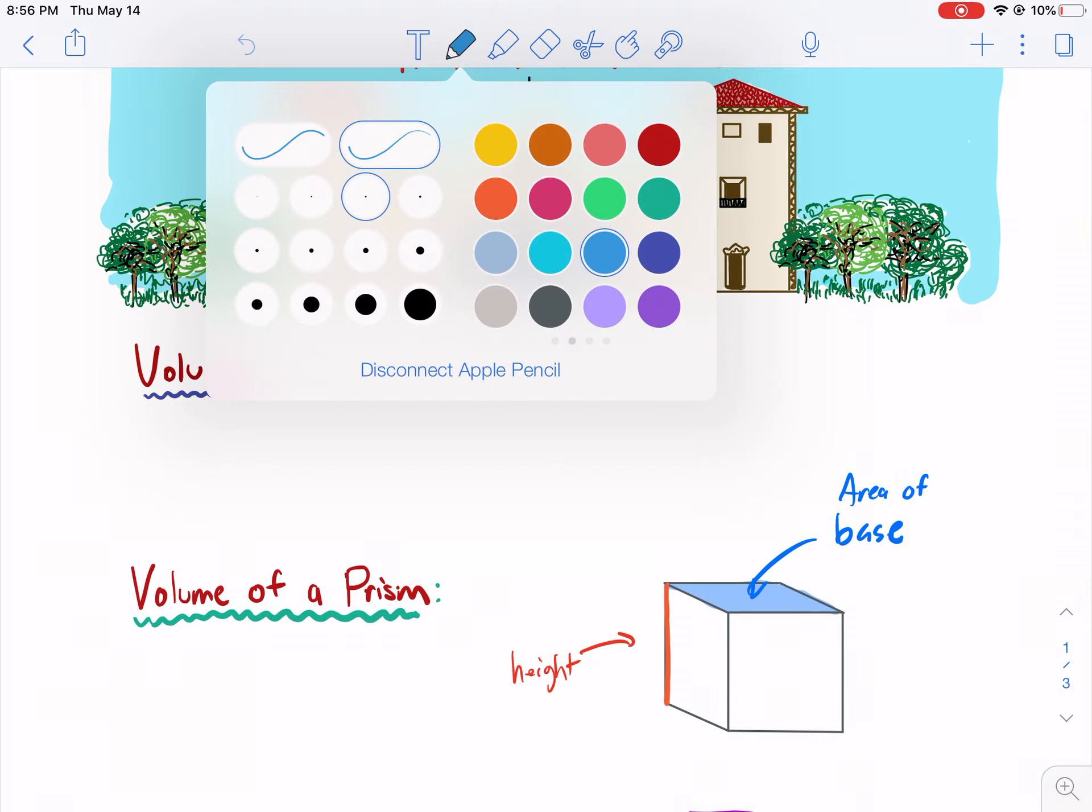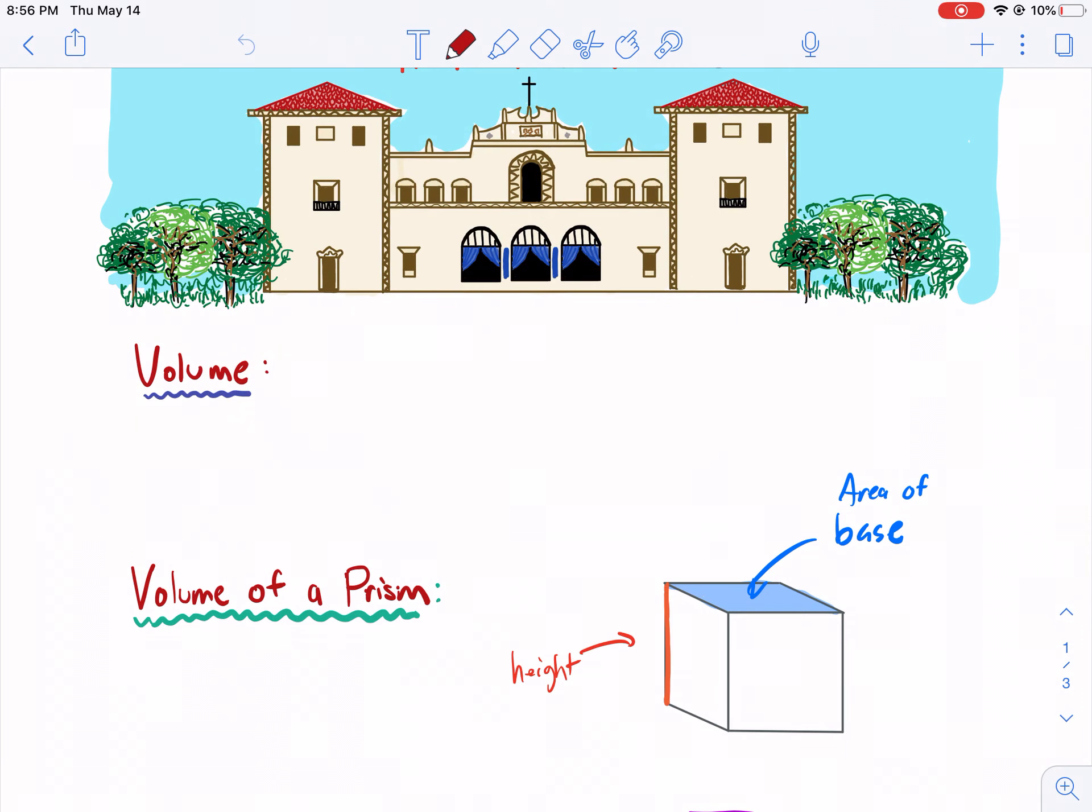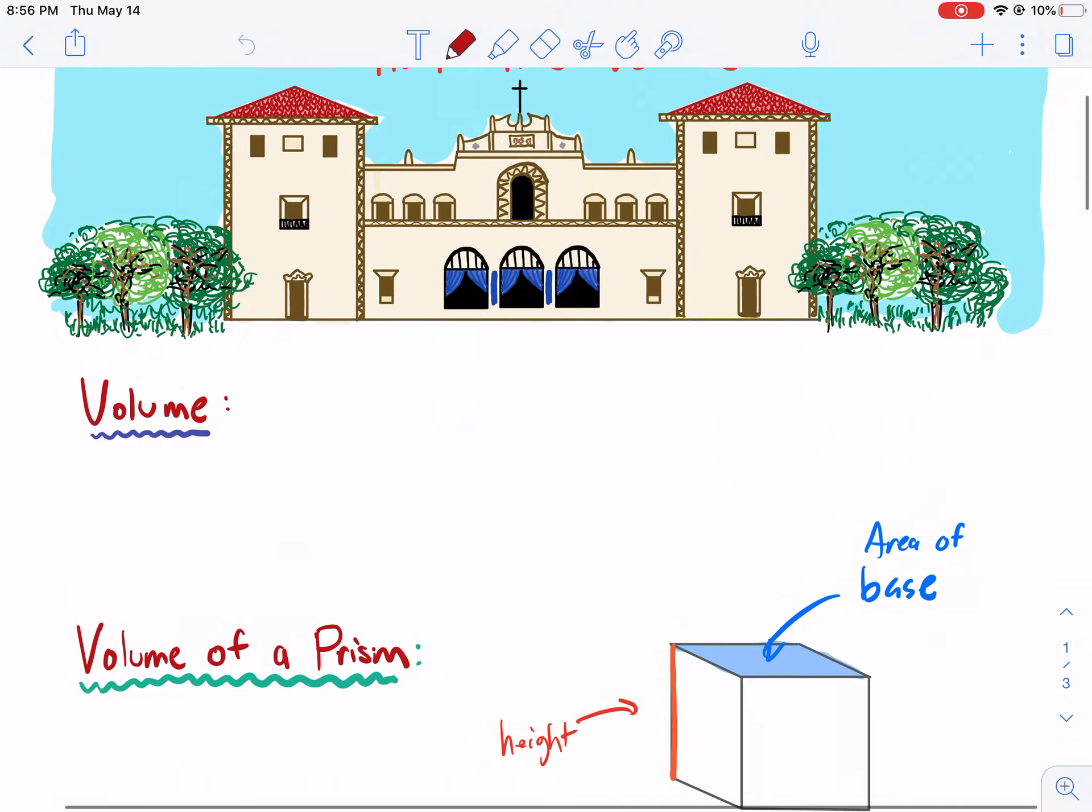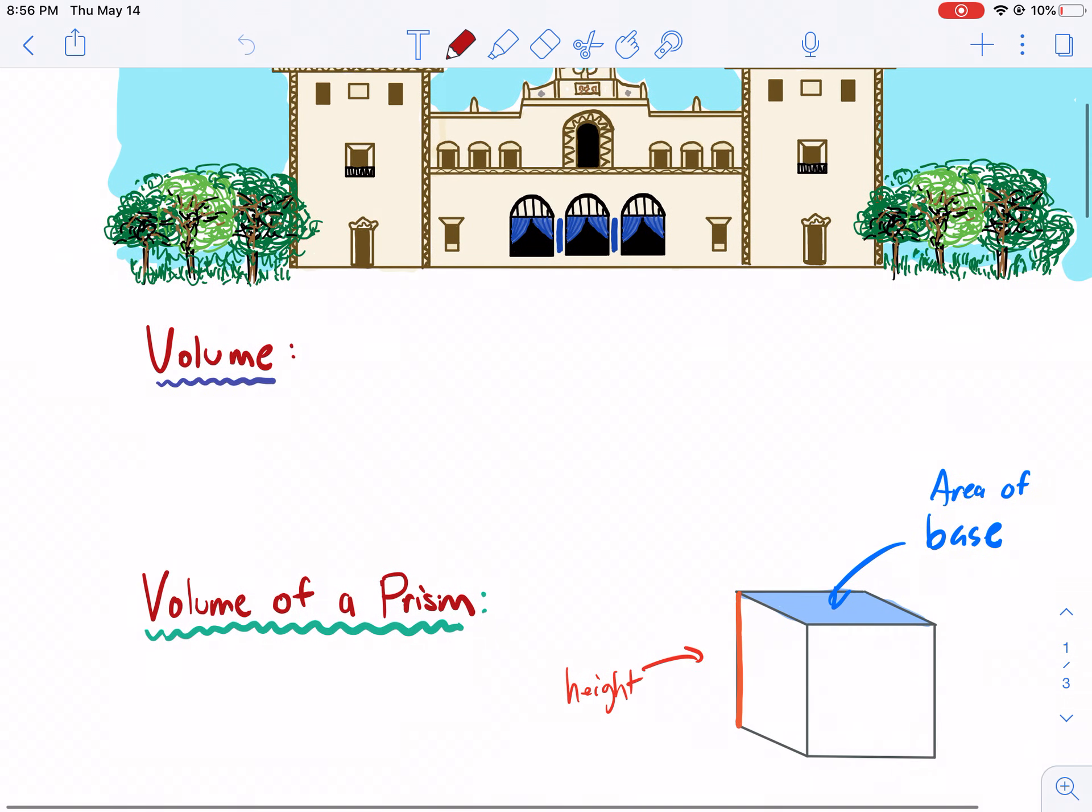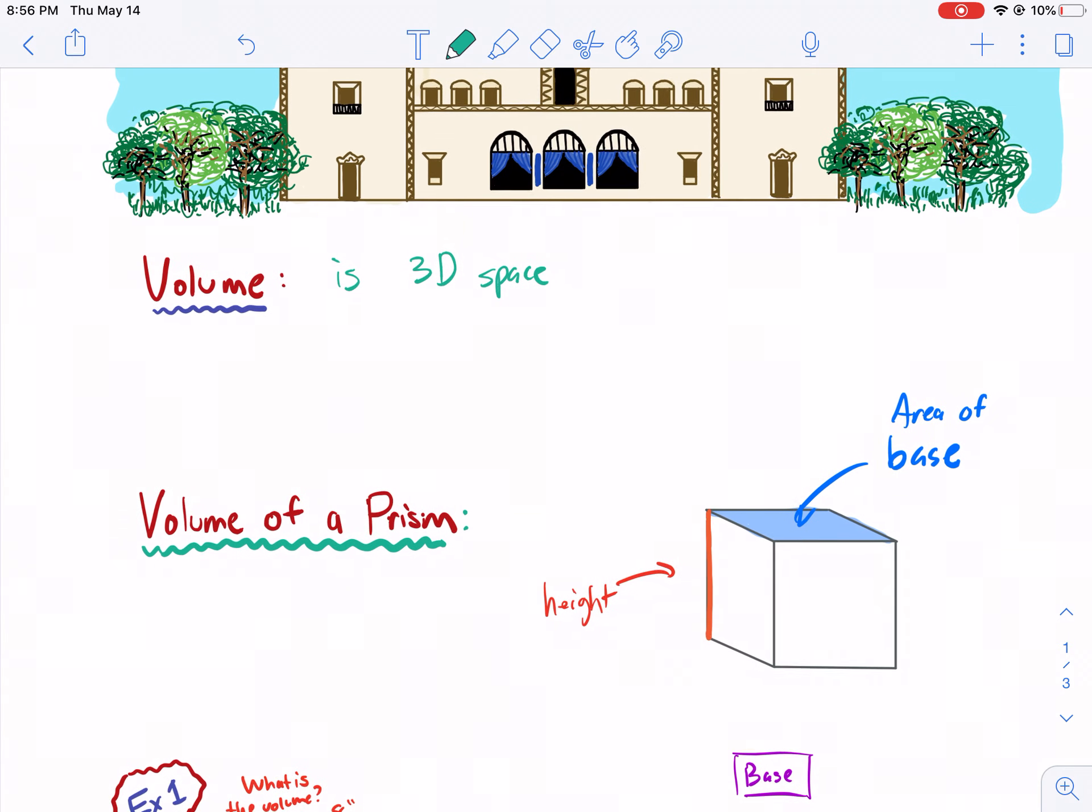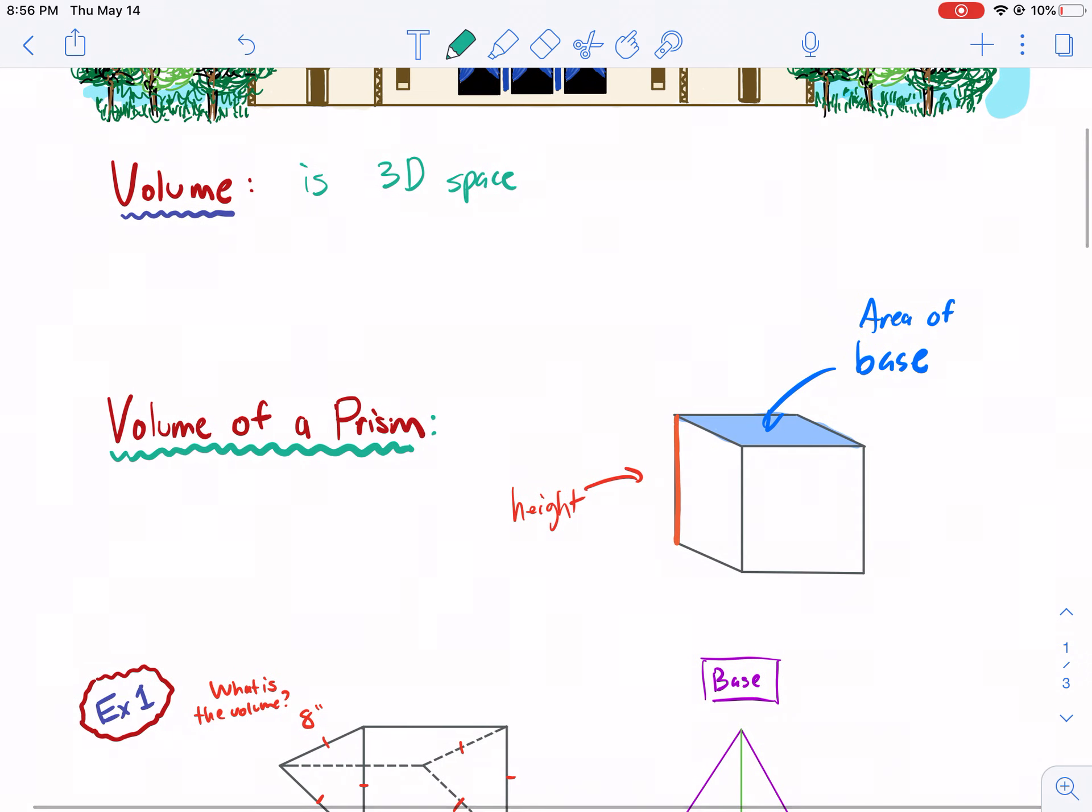Volume is a very relevant chapter. You're going to use it throughout your life. Containers, water bottles, houses, rooms, cars, everything uses volume. You use volume because your body composes volume. What is volume? Volume is 3D space, the amount of space in a three-dimensional plane, or planes I should say.